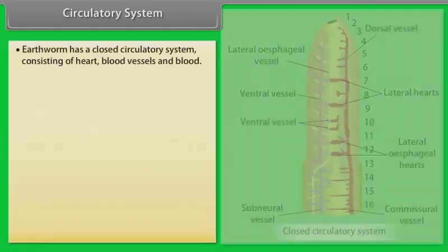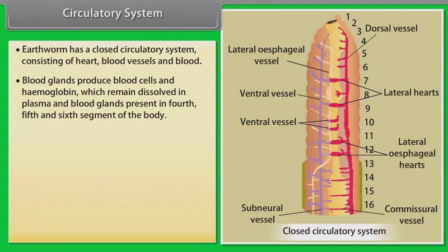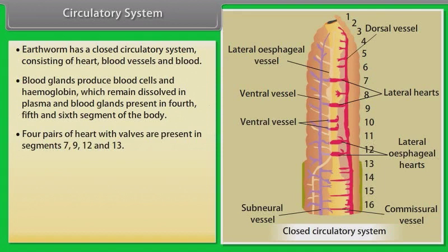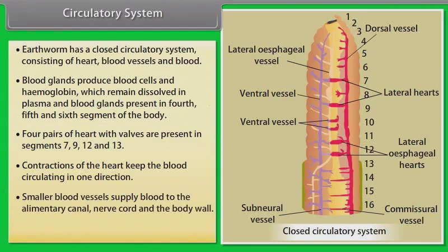Circulatory System. Earthworm has a closed circulatory system consisting of heart, blood vessels and blood. Blood glands produce blood cells and hemoglobin, which remain dissolved in plasma. Blood glands are present in the fourth, fifth and sixth segments of the body. Four pairs of hearts with valves are present in segments seven, nine, twelve and thirteen. Contractions of the heart keep the blood circulating in one direction. Smaller blood vessels supply blood to the alimentary canal, nerve cord and the body wall. Blood cells are phagocytic in nature.